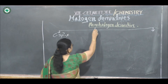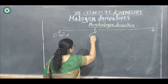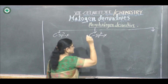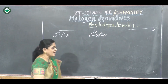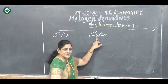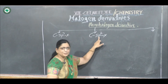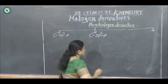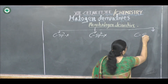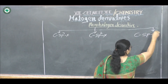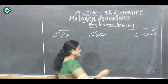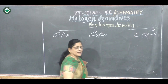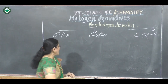Second, compounds containing sp2-X, that is a halogen atom attached to an sp2 type of hybridized carbon atom. And third, compounds containing sp-X, that is a halogen atom bonded to an sp type of hybridized carbon atom.